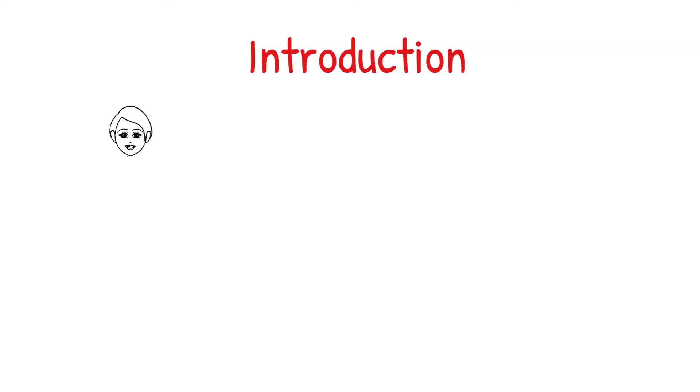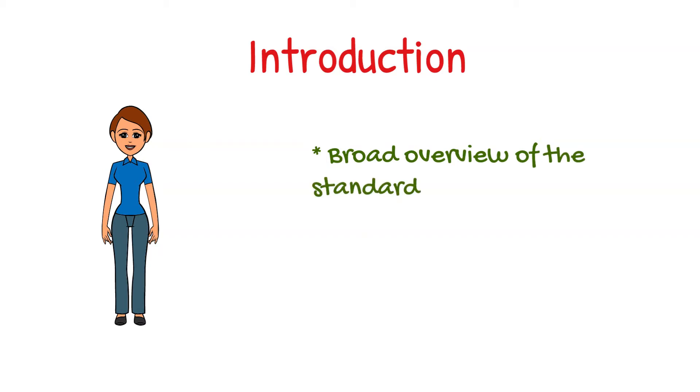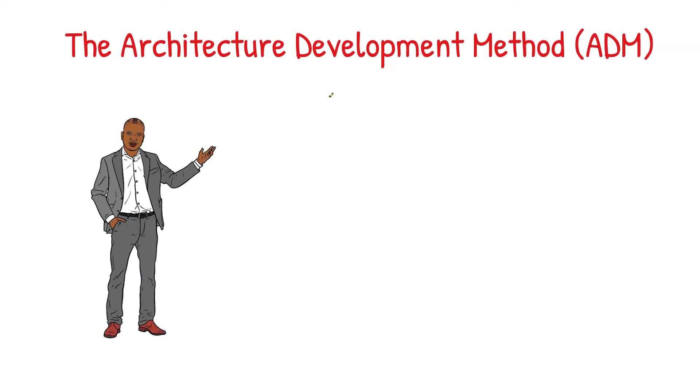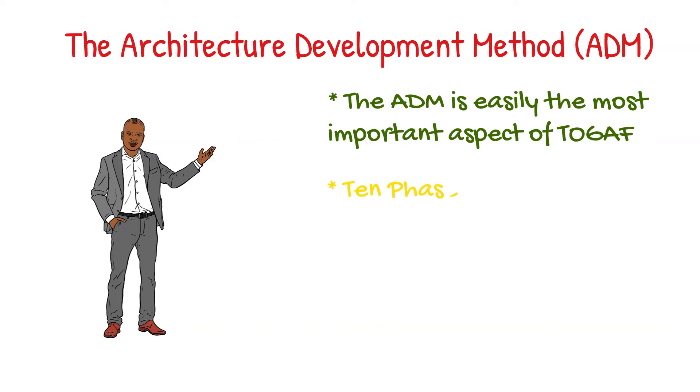The Introduction part of TOGAF deals with a broad overview of the standard and in this part, key terms that are used in the standard are defined. The Architecture Development Method or the ADM is easily the most important aspect of TOGAF. It consists of a series of steps that are required to arrive at an architecture for your enterprise. It's typically said that the ADM has 10 phases.